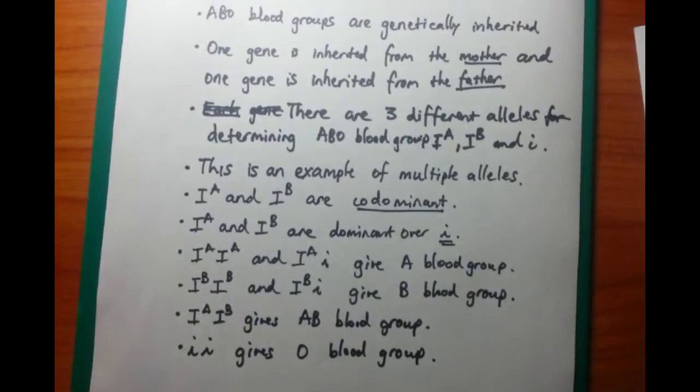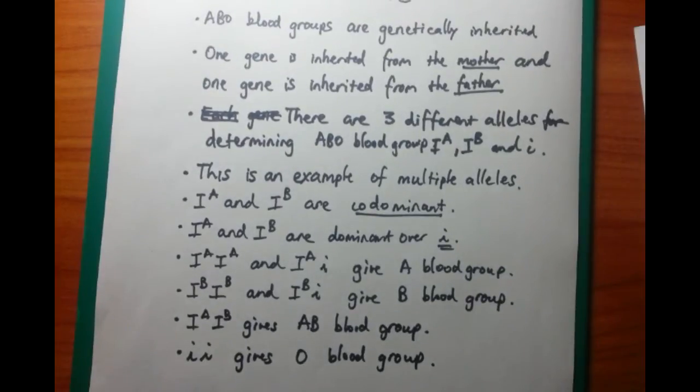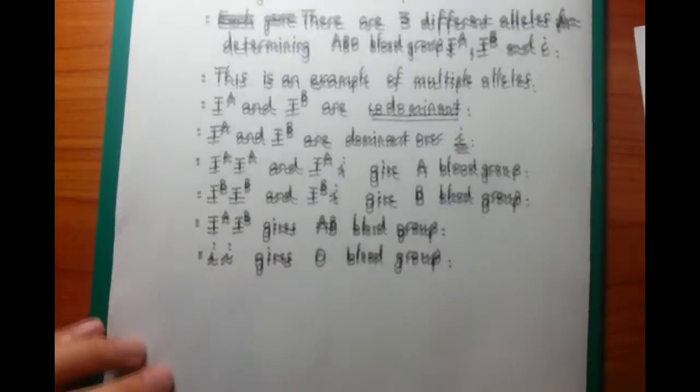So how do you get an A blood group? Well, there are two possibilities. Firstly, you can get I^A, I^A, homozygous. Or you can get I^A, little i.